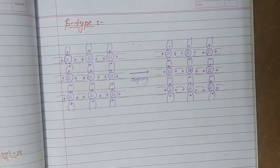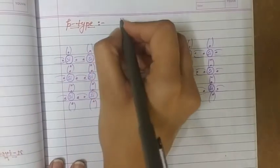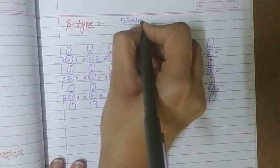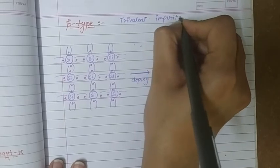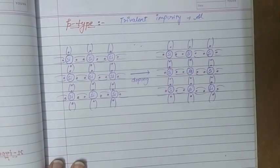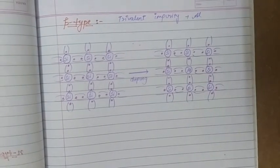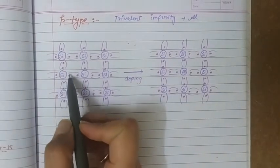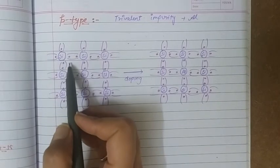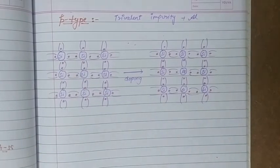Now moving to the valence bond model for p-type extrinsic semiconductors. In this case, the impurity used must be trivalent, so we dope the structure with a trivalent impurity — for example, aluminium. When there is no doping, every silicon atom forms four covalent bonds by sharing its electron with each nearby silicon atom.